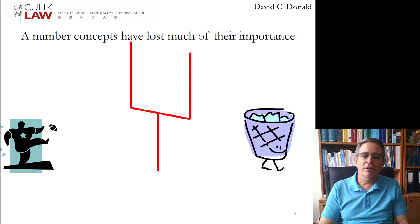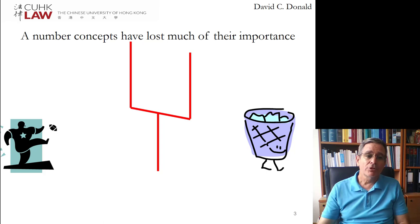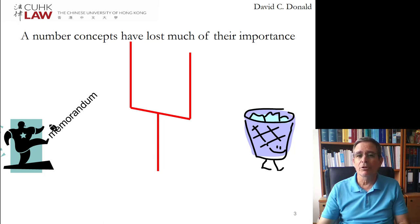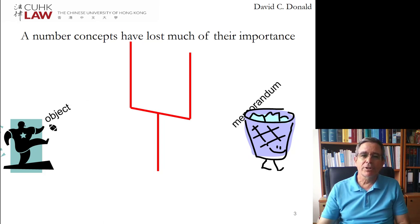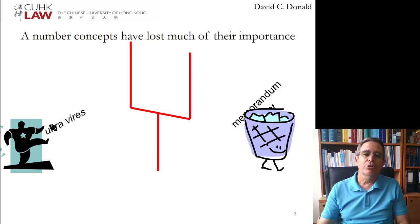This is an area where some concepts you may see in cases and in older scholarship, including some company law textbooks, have been eliminated. First, the memorandum, which I explained two weeks ago, has been eliminated from the law, so this is something you need not think about. The objects of the company, which can still be incorporated in the articles of association, are no longer required. The ultra vires doctrine, which would invalidate contracts for which the company has no legal capacity to enter into, has also been eliminated.